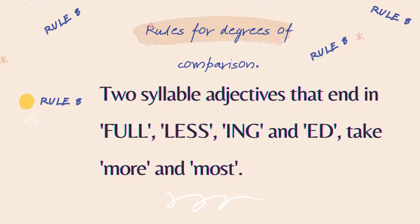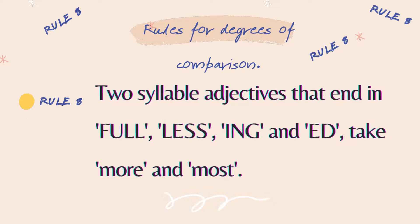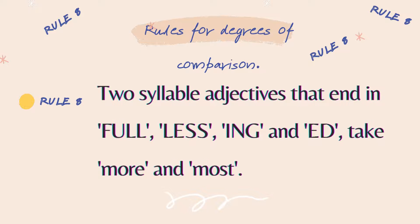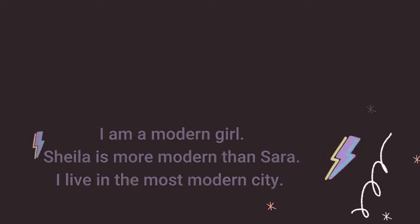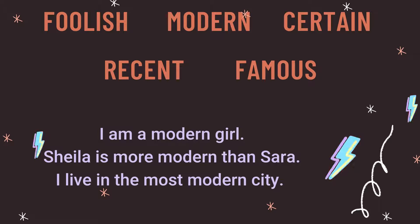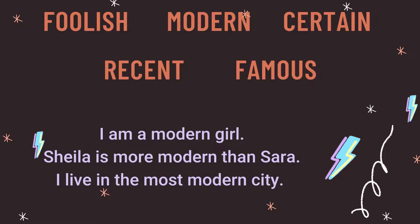Rule number 8 is for two-syllable adjectives that end in -ful, -less, -ing, and -ed. They always take 'more' and 'most'. Examples include foolish, modern, certain, recent, and famous. All these words take more and most — more for comparative. For example: famous, more famous, and most famous.